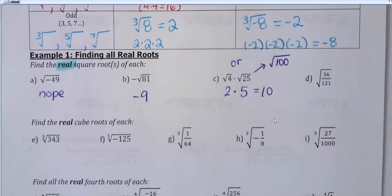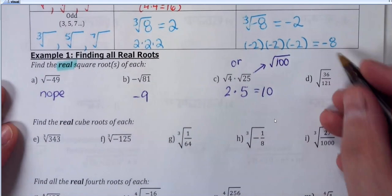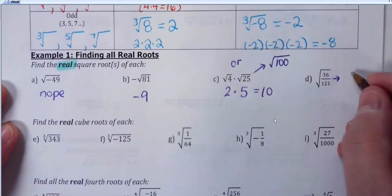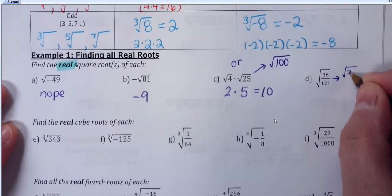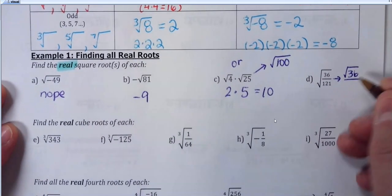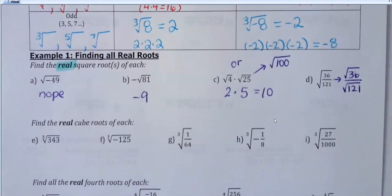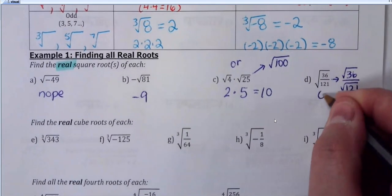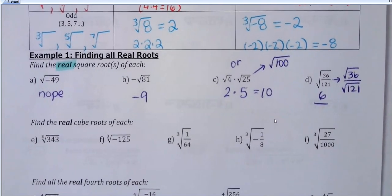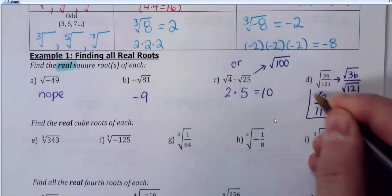If you have division — I have 36 over 121 in the next question — I would try to reduce the fraction first if I could. In this case you're not going to be able to reduce anything. So what I would do is take the square root of the top and bottom separately. Square root of 36 is 6, and square root of 121 is 11. So your answer is just six over 11 — that's all you do.